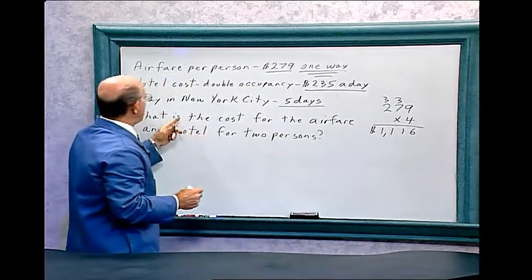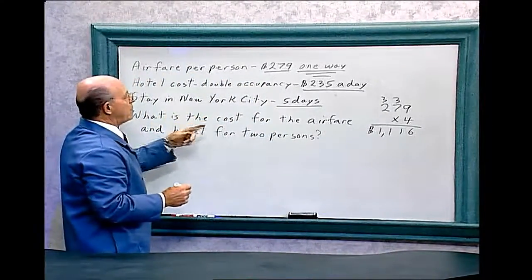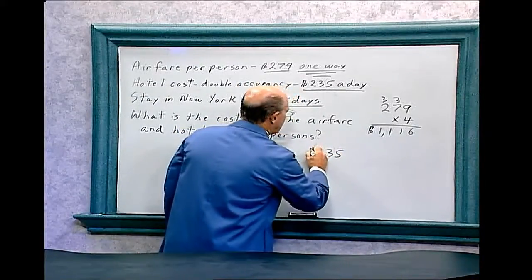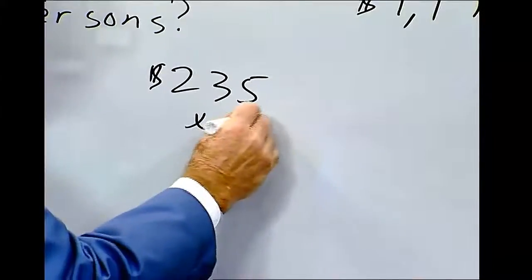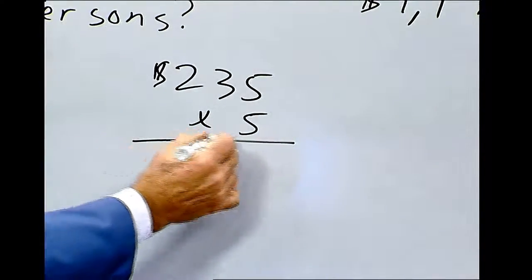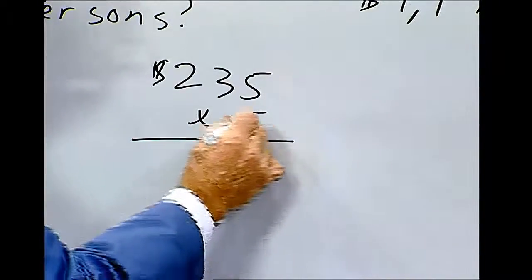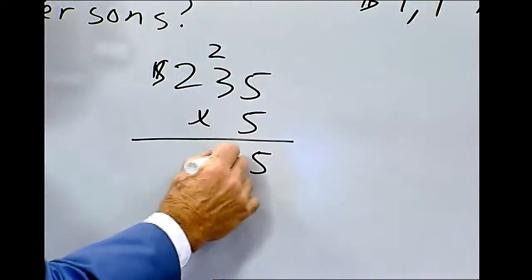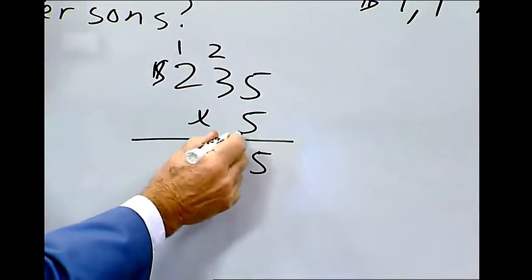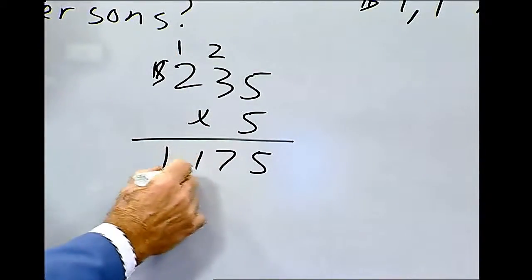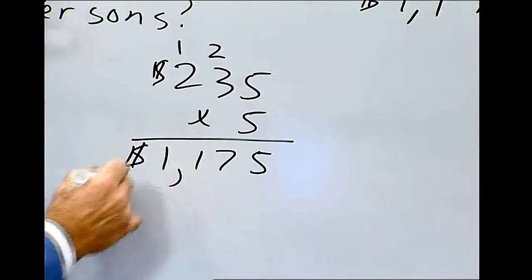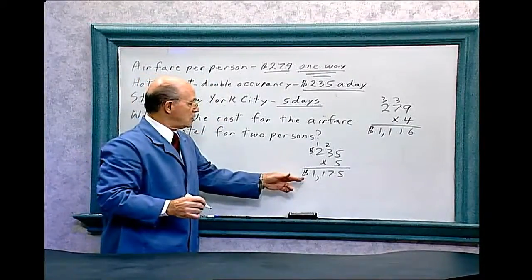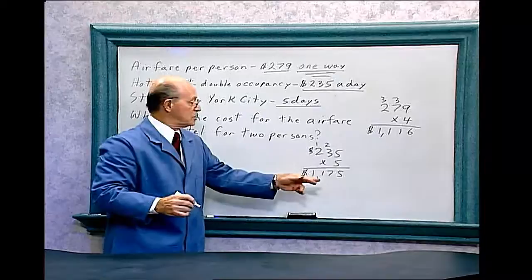Now you also stay in the hotel for five days, so it's $235 times five. Five times five is 25. Five times three is 15, plus two is 17. Carry the one. Five times two is 10, plus one is 11. So to stay in that hotel for five days costs $1,175.